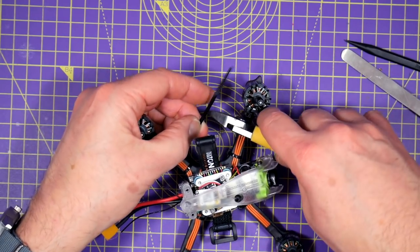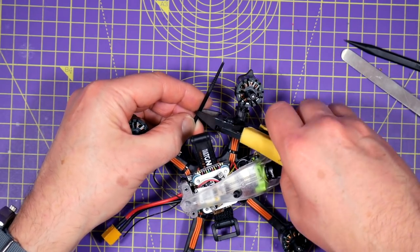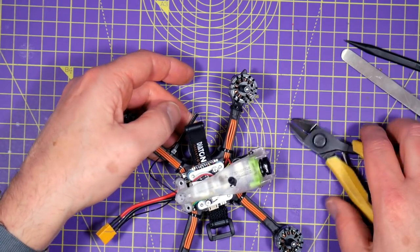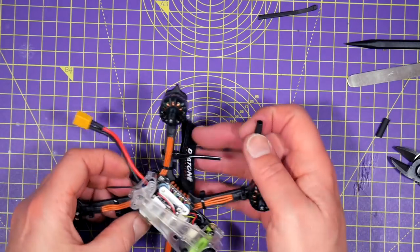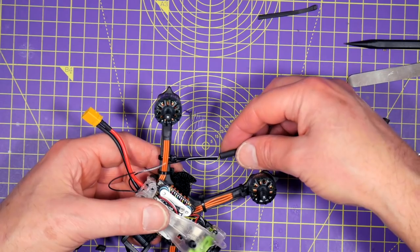When you're doing this be careful that you don't damage the exposed part of the antenna or snip it off. Next just get yourself a piece of heat shrink and cut it off to the right length.